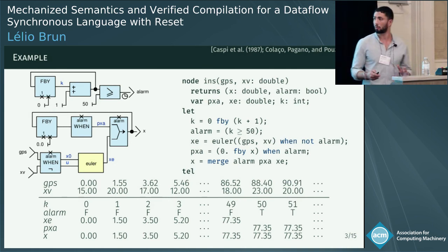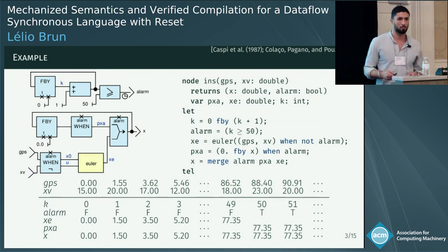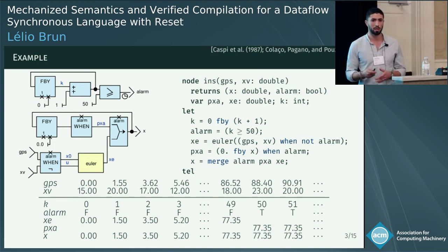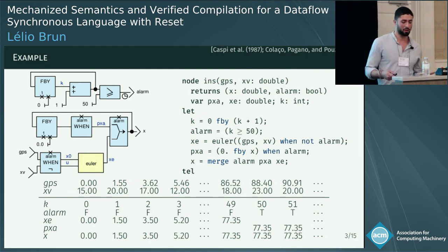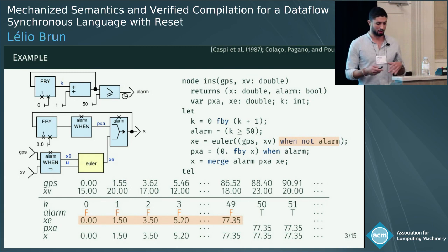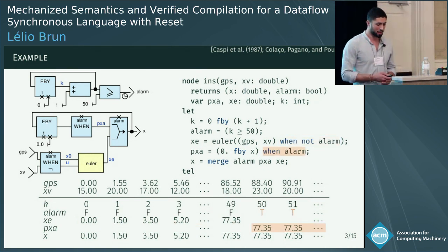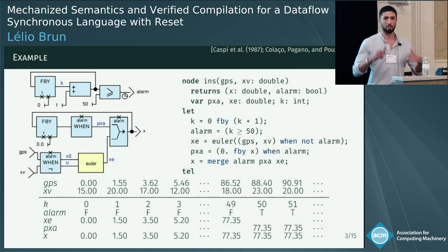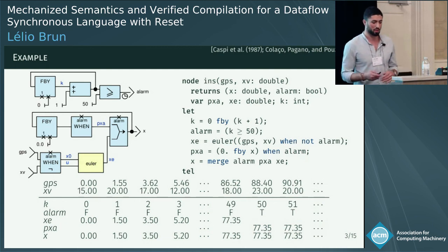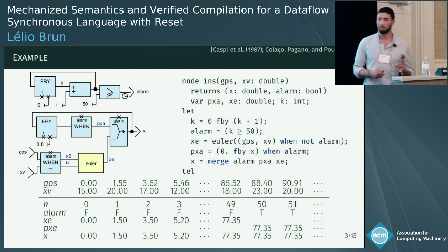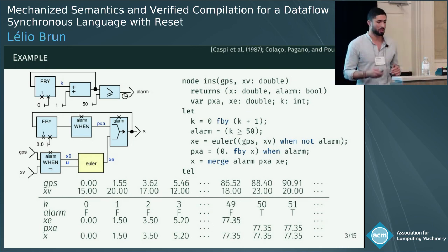Here is a more complex system where the previous code is instantiated. The INS node represents a simple inertial navigation system where the Euler node computes position x for 50 steps, then x is frozen and the alarm fires. The Euler node is activated on sampled inputs when the alarm is false using the 'when' keyword. PxA is the previous value of x sampled when the alarm is true. Finally, x is a combination of two complementary substreams defined using the 'merge' keyword. One important detail is that reordering the equations does not change the meaning of the node.